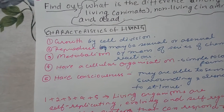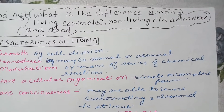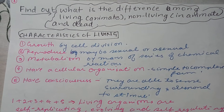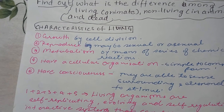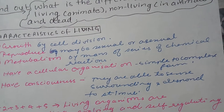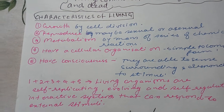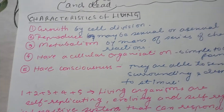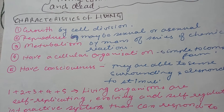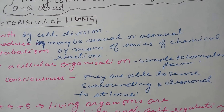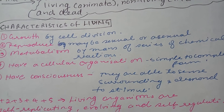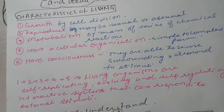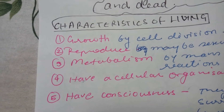Next is cellular organization. Simple organisms and complex organisms exist. In complex organisms, cells group together to form tissue, tissue forms organs, and organs form organ systems. Every organism has its cellular organization. Living organisms also have consciousness — the ability to sense the surroundings and respond to stimuli. A dead person or someone in a coma won't be able to sense the surrounding.